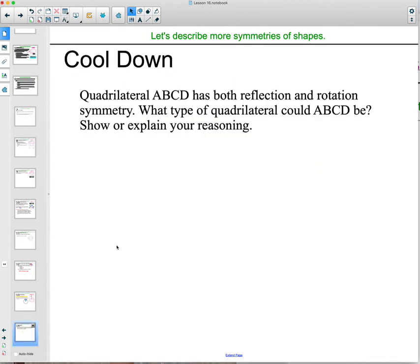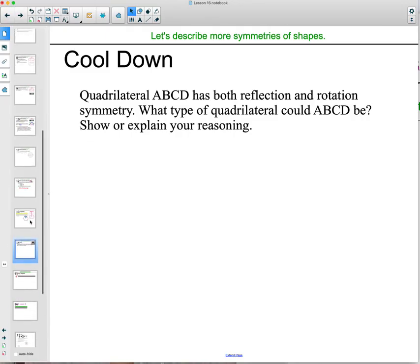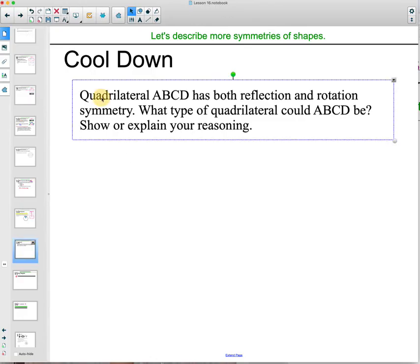All right, then your cooldown is going to say quadrilateral ABCD has both reflection and rotation symmetry. So what type of quadrilateral could ABCD be? Show or explain your reasoning. So remember a quadrilateral has four sides. So we need a four sided figure that has both reflection and rotation symmetry.